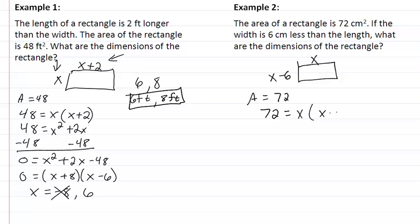So we have 72 equal to x squared minus 6x, subtract 72 from both sides. So we have 0 equal to x squared minus 6x minus 72.